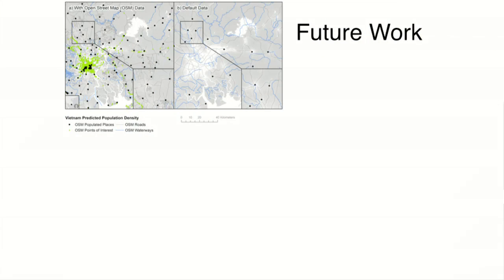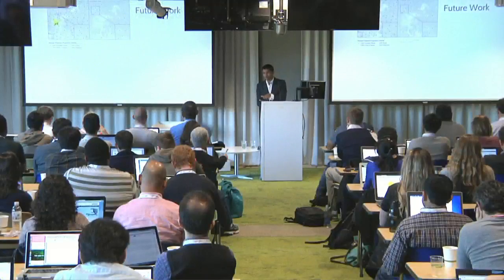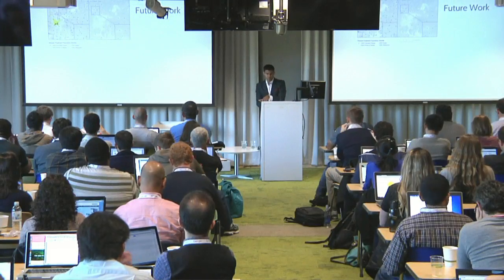Some of our future work includes extracting current urbanization data from Google Earth Engine. We've also been really impressed by OpenStreetMap data, especially in West Africa with current humanitarian efforts, where it's producing very current data. We're including OpenStreetMap on a global scale, which improves both the visual and statistical performance of our population mapping method.